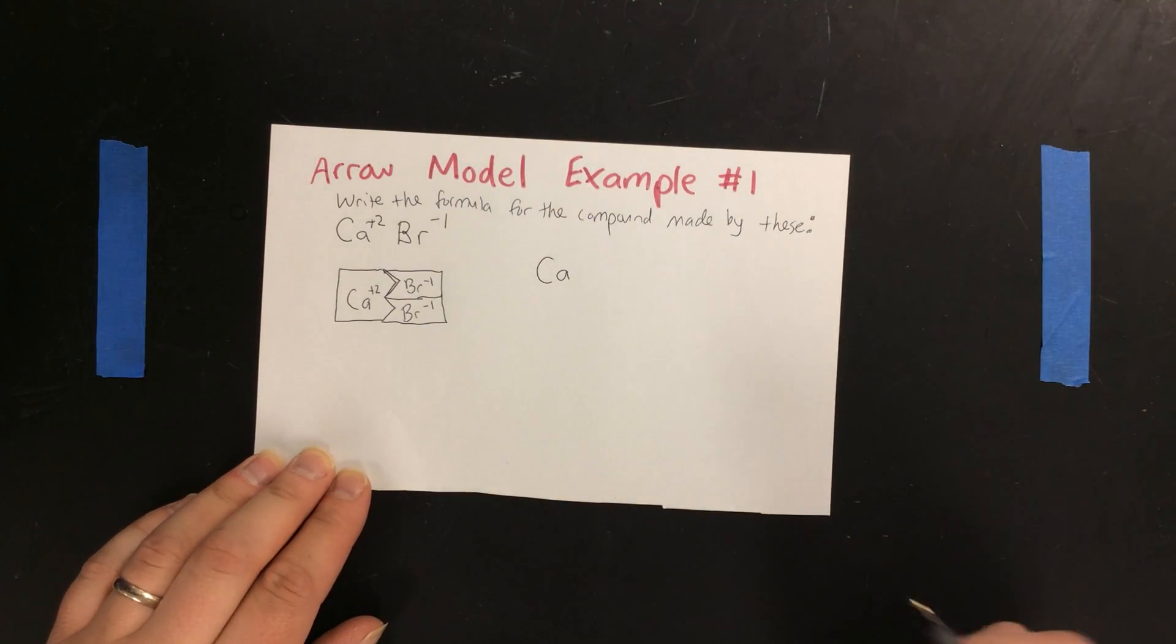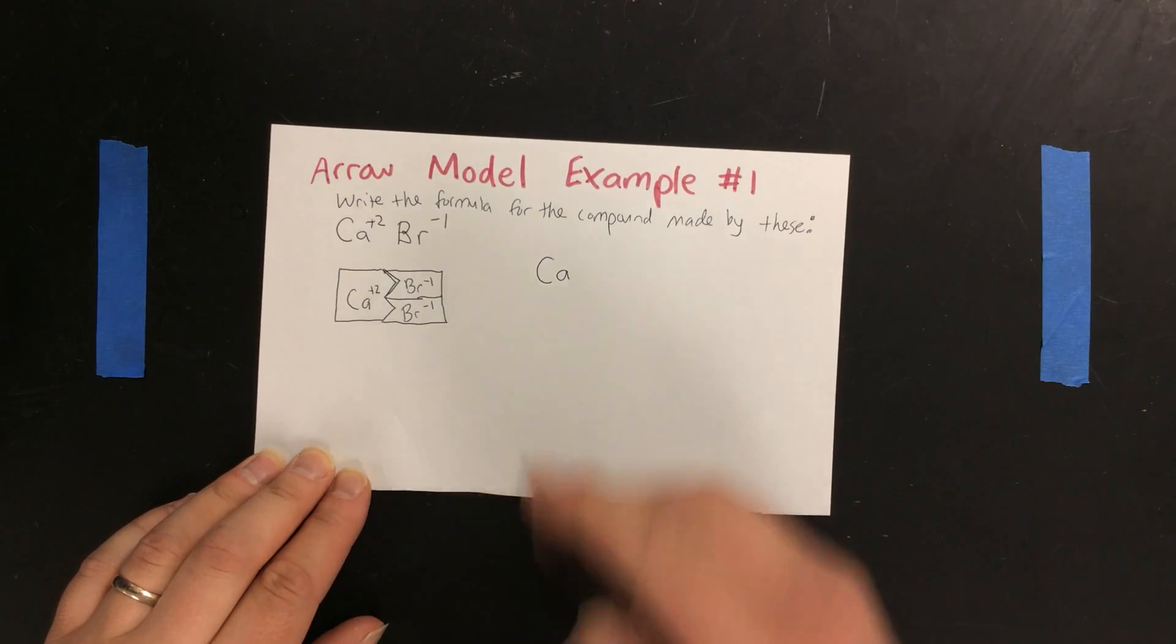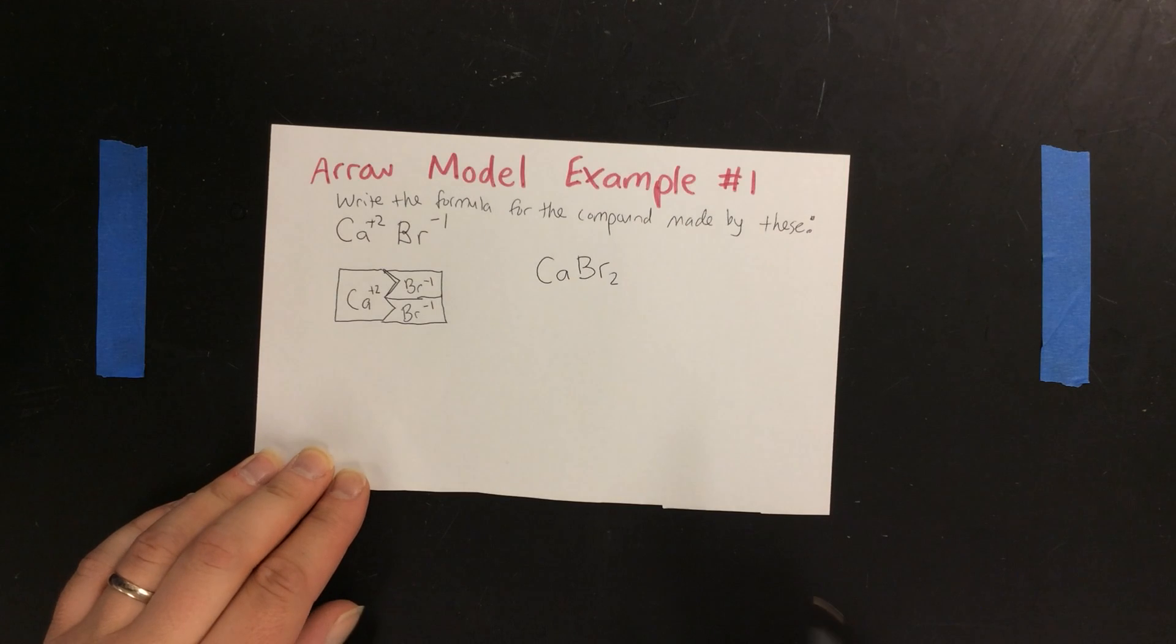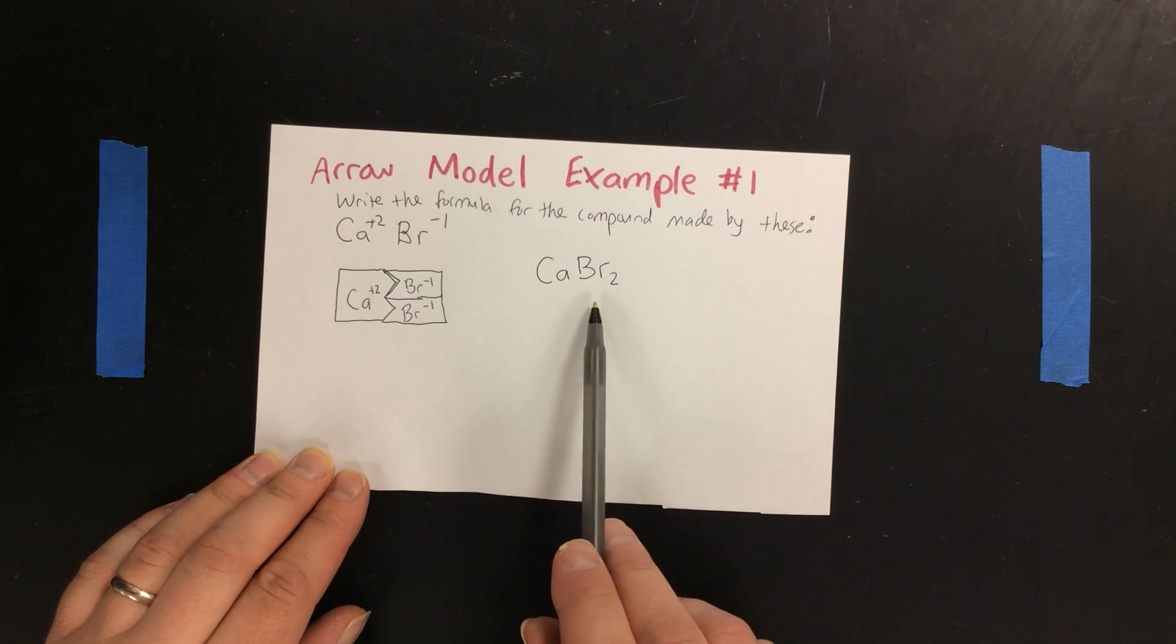It's implied there's only one of them. To show there's two bromines, we put Br with a subscript of two. So the formula is CaBr2.